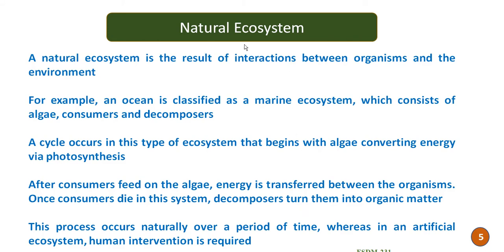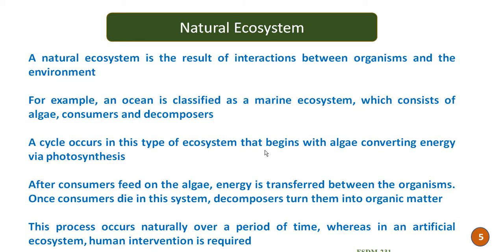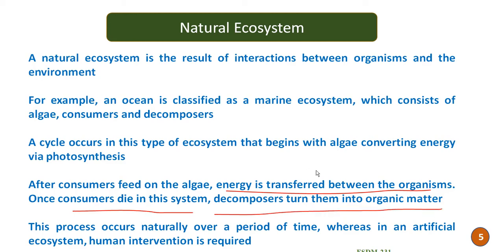A natural ecosystem is the result of interaction between organisms and their environment. For example, an ocean classified as a marine ecosystem consists of algae, consumers, and decomposers. These naturally occurring ecosystems have a cycle that begins with algae converting energy via photosynthesis. After consumers feed on the algae, energy is transferred between organisms. Once consumers die, decomposers turn them into organic matter. This process occurs naturally over a period of time, without human intervention.